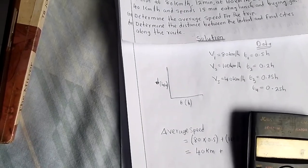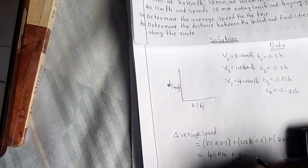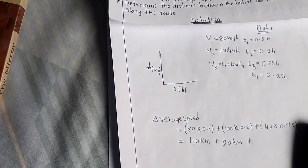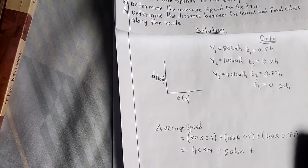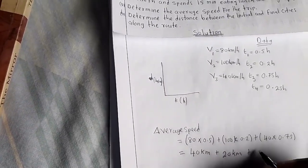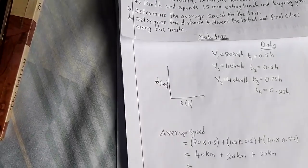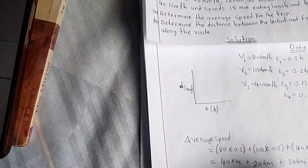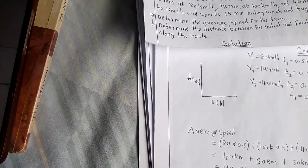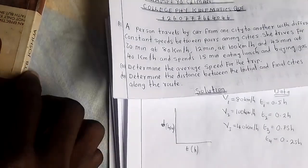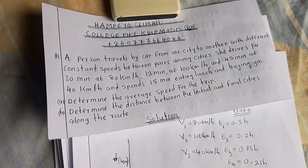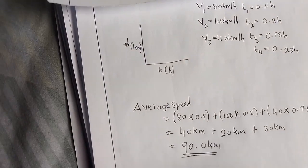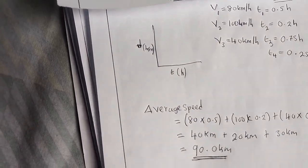Continuing: 40 multiplied by 0.75 gives 30 kilometers. Adding everything together: 40 plus 20 plus 30 gives 90.0 kilometers. Interestingly, by using this formula we have already found the answer to part B — the total distance is 90 kilometers.